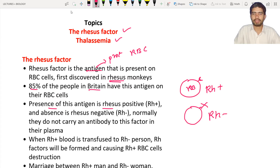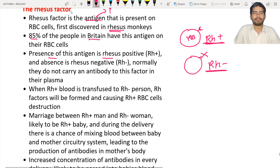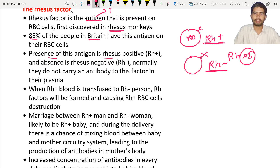The presence of this antigen is known as Rhesus positive. If the antigen is present on the surface of the RBC, they are known as Rh positive individuals; if they don't have the Rh antigen on the surface, they are known as Rh negative. Normally they do not carry antibodies to this factor in their plasma — no Rh antibodies in the plasma. Both antigen and antibody are proteins.